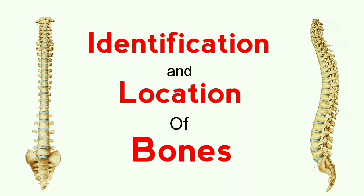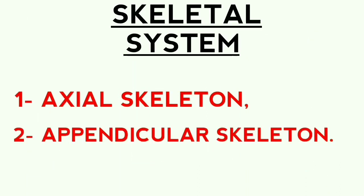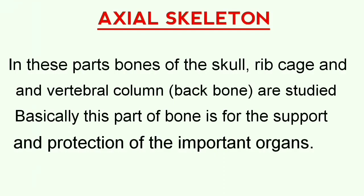Good morning students. Today I am going to teach the skeletal system. Our today's topic is identification and location of bones. The systematic arrangement of bones in our body is called the skeletal system. Our skeletal system contains 206 bones, and they are divided into two major parts: axial skeleton and appendicular skeleton.